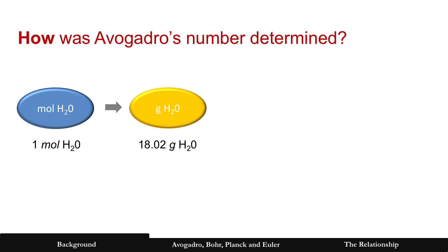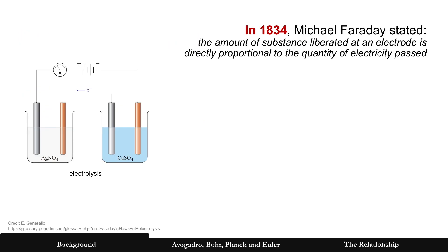All right, but how was Avogadro's number determined? Well, back in 1834, Michael Faraday stated that the amount of a substance liberated in an electrode is directly proportional to the quantity of electricity passed. What does that mean? That's Faraday's laws of electrolysis. Basically running a current with a charge through it is proportional. As you increase the current, more stuff accumulates that substance. And it was proportional to charge.